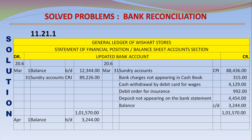Solution: General Ledger of Fish Art Stores, Statement of Financial Position, balance sheet account section — updated bank account. Debit side: March 1, balance brought down 12,344; March 31, sundry accounts CRJ 89,226. Credit side: sundry accounts CPJ 88,436; bank charges not appearing in cash book 315; cash withdrawal by debit card for wages 4,129; debit order for insurance 992.